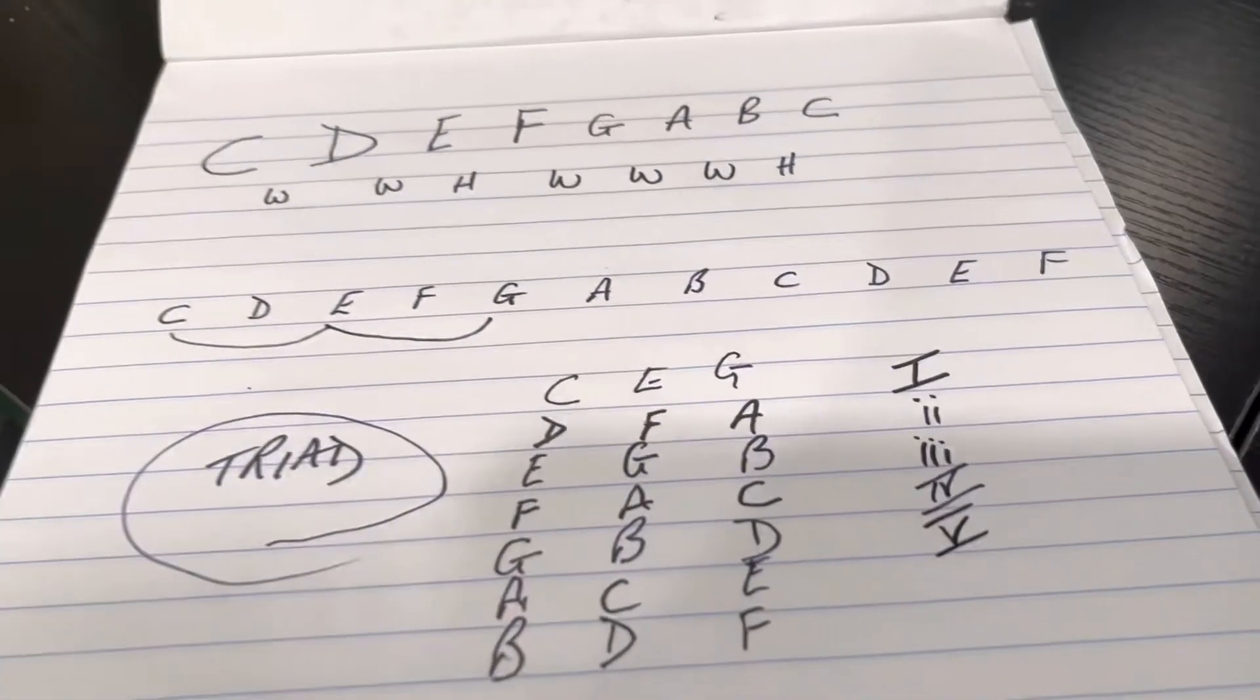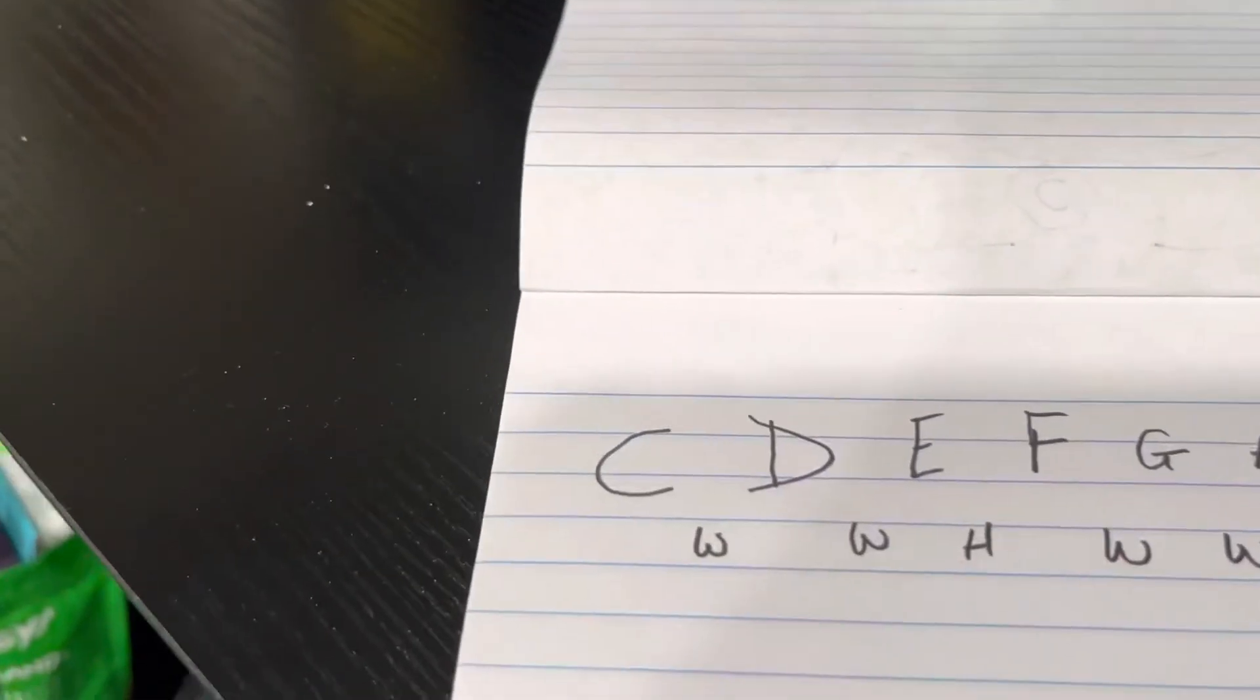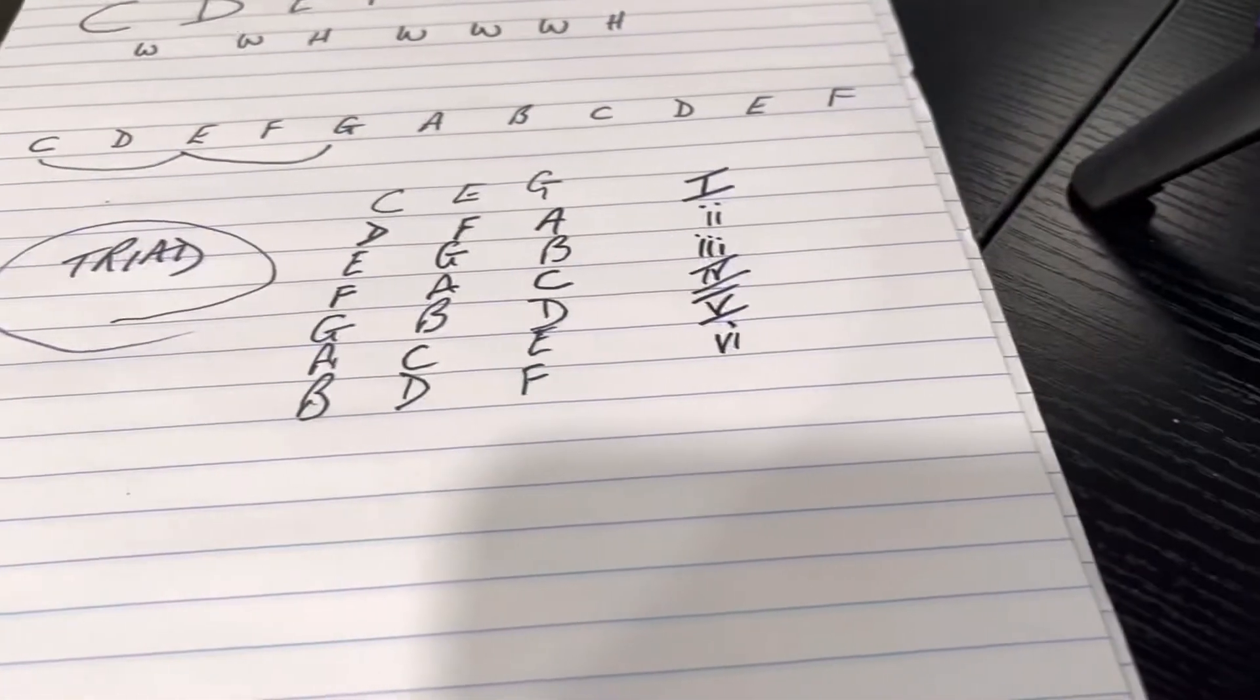The sixth chord relating to the note starting on A is a minor chord, so it gets a Roman numeral VI like that.